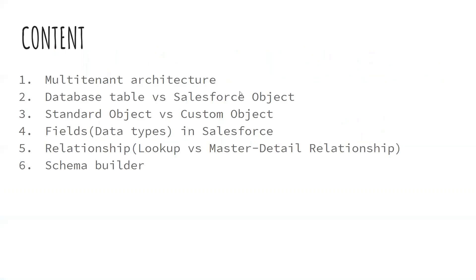Let's get started with Salesforce admin part two. First we will look at what topics we are going to cover: Salesforce architecture and the Salesforce data model. We will talk about multi-tenant architecture, database table versus Salesforce object similarities and differences, standard objects and custom objects, fields and data types, relationships like lookup and master-detail, and finally the schema builder in Salesforce.